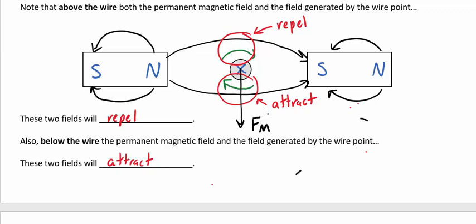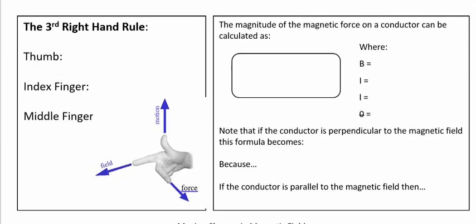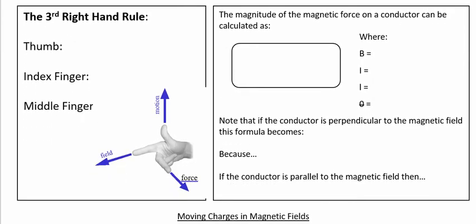I want you to notice the directions that all these things are happening: the magnetic field of the magnets is happening in the left-to-right plane, the current is going into the page, and the resulting force is down the page. Notice how that's happening in all three dimensions of space — x, y, and z. The simplest way for us to predict these forces is to use the third right-hand rule, which will be the final right-hand rule we learn.